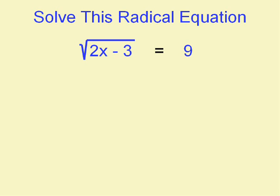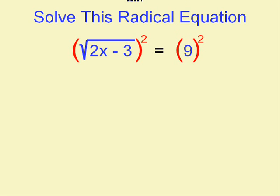Let's look at an easy one. At this point the radical part of the equation is already isolated — it's already by itself — so we've already done step one. We'll get rid of it by squaring, or raising to the power of the index, which in this case is 2. We have to do it to both sides. On the left side, the squaring will just get rid of the radical — it's the inverse. And on the right side, we'll get 81.